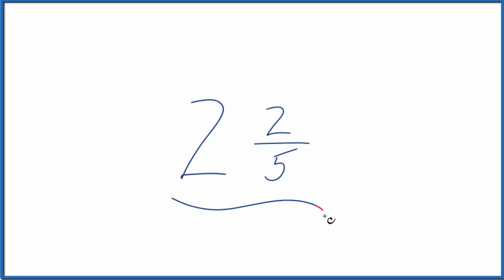If you're asked to convert 2 and 2 fifths to an improper fraction, here's how you do it. So right now we have a mixed number. We have our whole number, that's the 2, and then we have our fraction, the 2 fifths. So that's a mixed number.